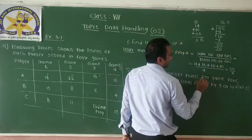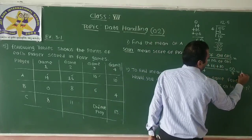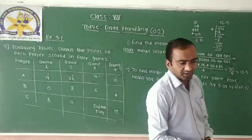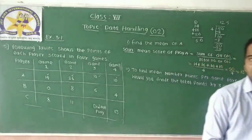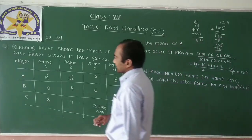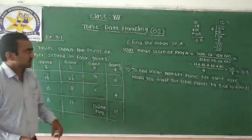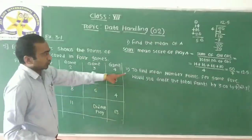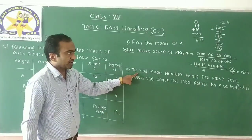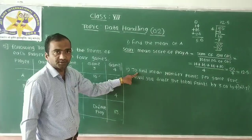We have found the mean score of Player A, which equals 12.5. The second question asks us to find the mean number of points for Player C.